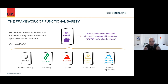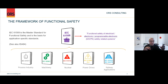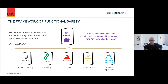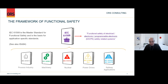IEC 61508 is the master standard for functional safety. Whenever you have a question about functional safety, you go to the standard or to someone who knows a lot about it. Below IEC 61508 exists many application-specific standards. If you work in the process industry, you've heard of IEC 61511, which is the application of 61508 to the process industry. There are also standards for machinery, nuclear plants, power drives, railway applications, and the automotive industry. They all define how functional safety is applied to their specific industries, and therefore how SIL is defined for each of them.